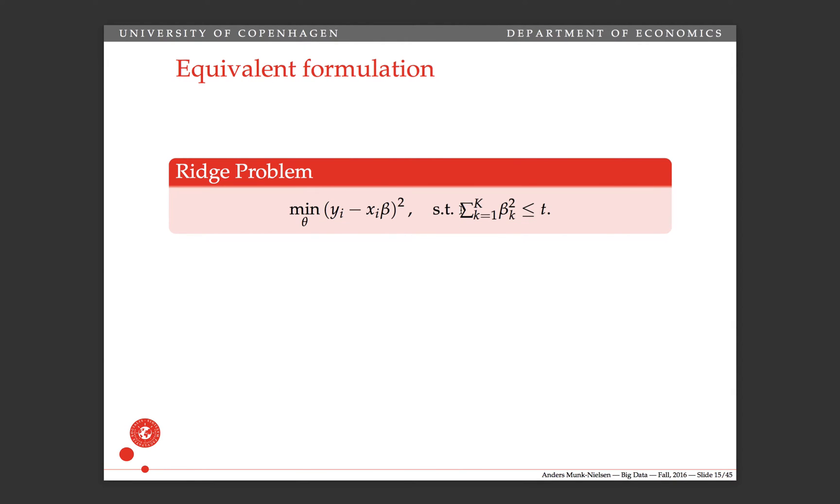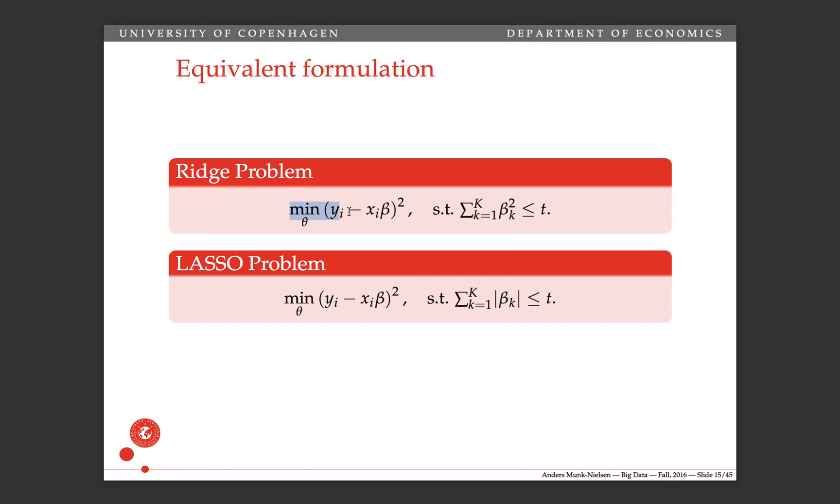There's an alternative geometric way of interpreting these two problems. The Ridge problem and the LASSO problem, they're both minimizing a squared residual subject to a constraint that either the squared coefficients, the sum of those, are smaller than some t, or that the sum of absolute coefficients are smaller than some t. And for each of these two, there's a one-to-one relationship between the t in this case and the lambda before.